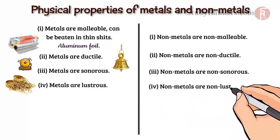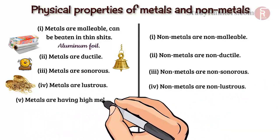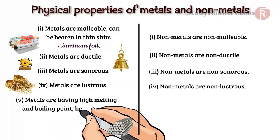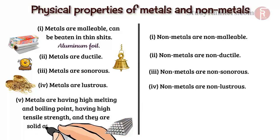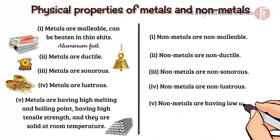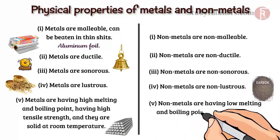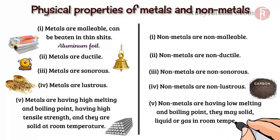Non-metals are non-lustrous. Metals have high melting and boiling point, high tensile strength, and they are solid at room temperature. Non-metals have low melting and boiling point. They may be solid, liquid, or gas at room temperature.